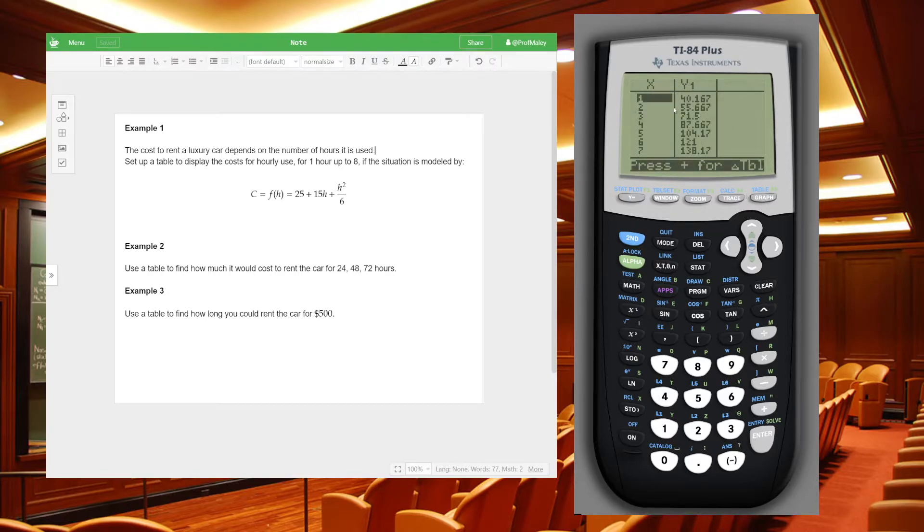And so what we see is I've got my inputs. So hour one, two, three, four, five, six, seven. And then my output's the cost of renting the car. And we can scroll down to eight. And if you're interested, you can keep going. But our question asked for just hours one to eight. So we can copy these down and generate that table. Not too bad.